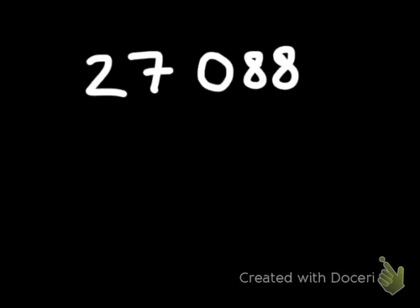Let's take a look at 27,088. We look at the last three digits — 0, 8, 8 — which give us the number 88. Does 8 go into 88? Yes, it does. So 8 will divide evenly into 27,088.